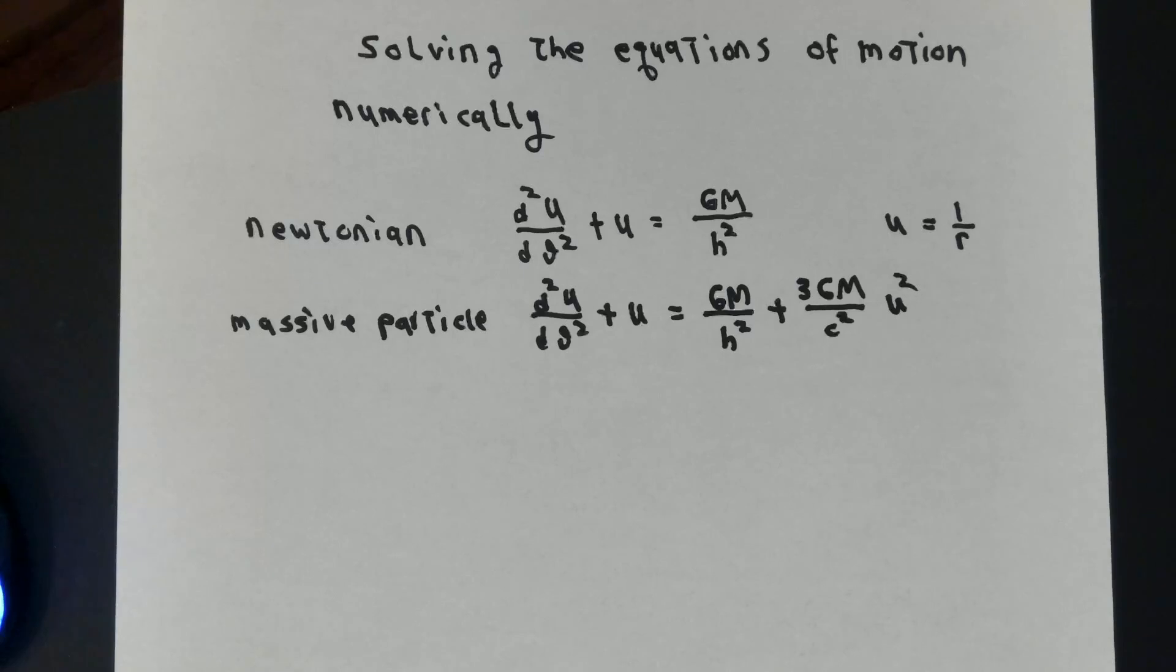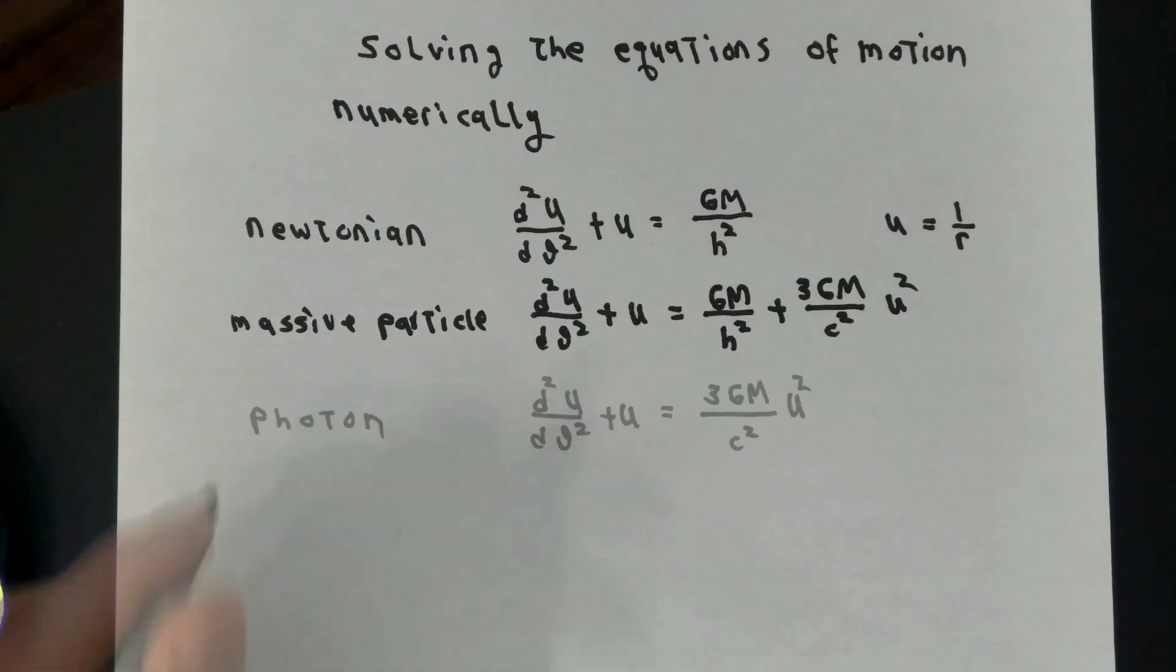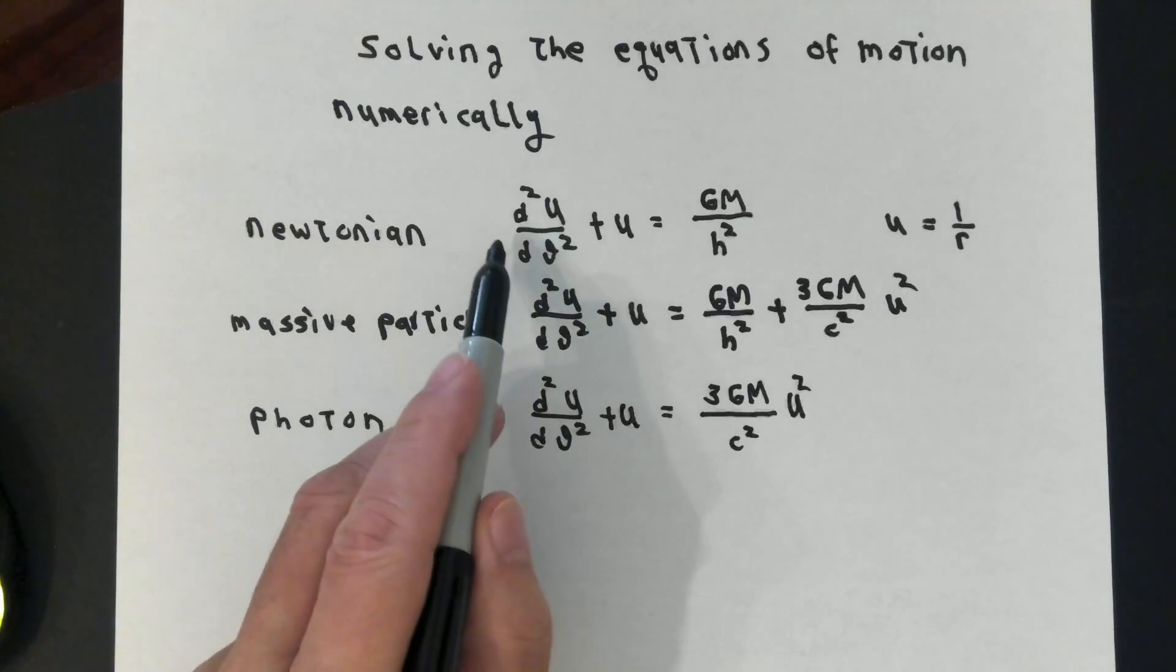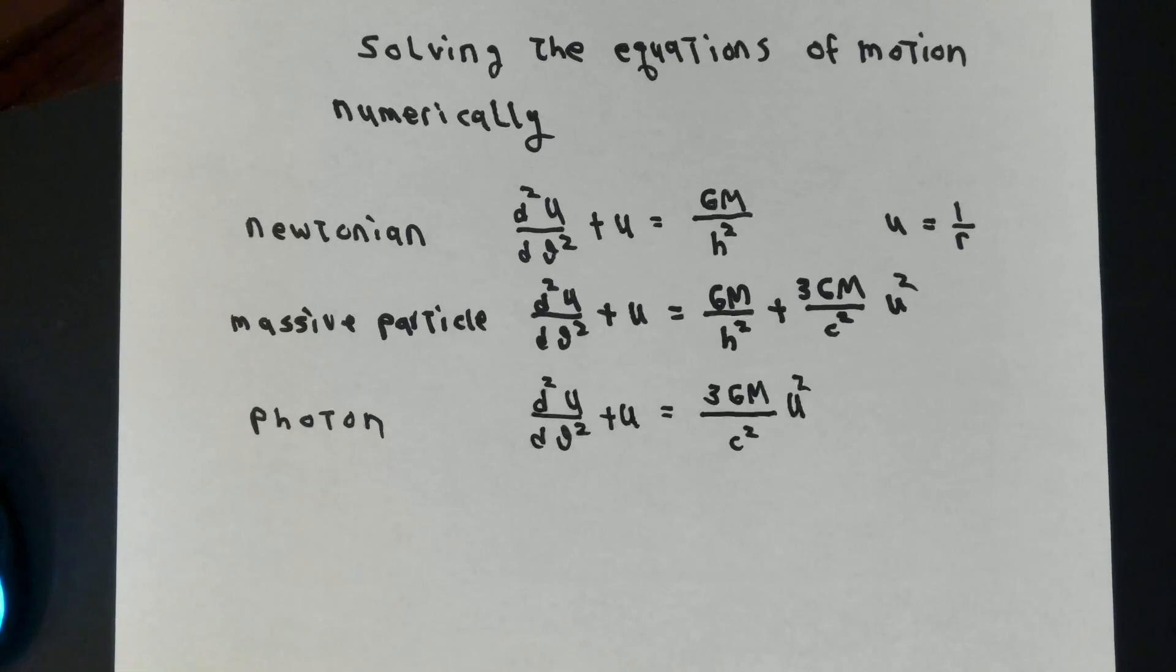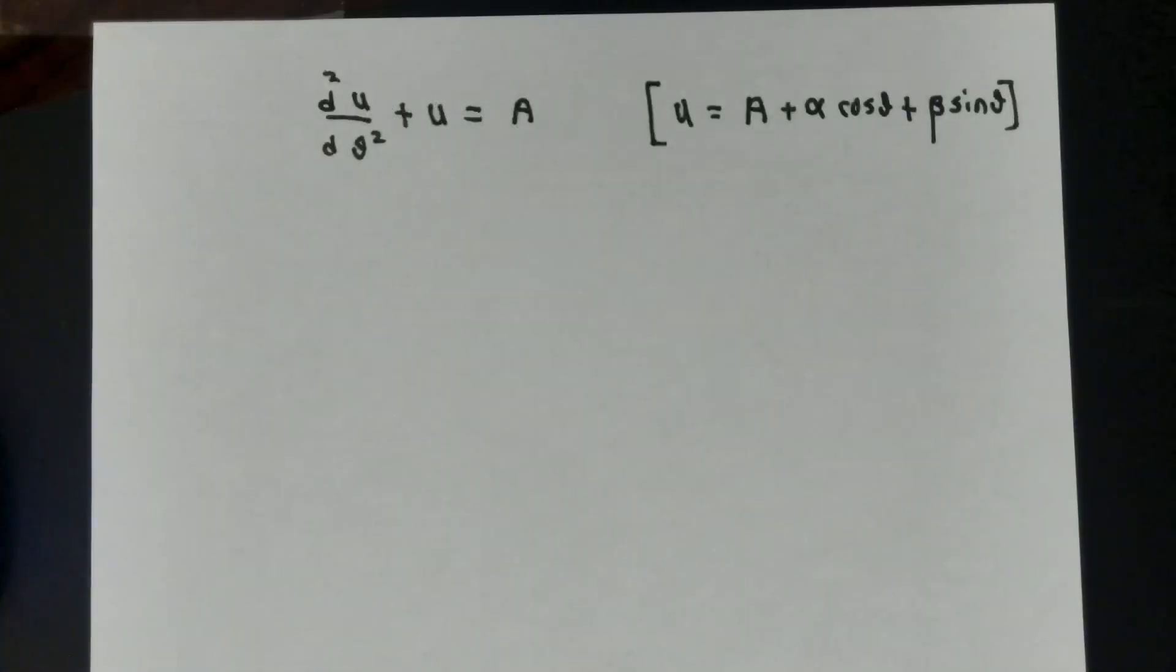In the case of a photon, we were also able to get the equation of motion. Today, I want to primarily think of the Newtonian case and the massive particle case. If we investigate the photon case, it turns out to be similar and in some ways easier. For illustrative purposes, I'm going to think of the Newtonian case. I want to start with this because I know what the exact solution to such a thing is supposed to be.